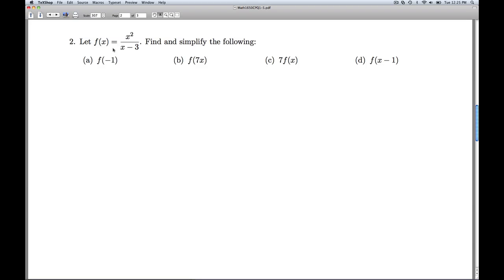Number 2, we're given f of x as this. We're asked to find and simplify the following. And so part a, we're asked to find f of negative 1. And so we're going to replace every occurrence of x in this formula with the quantity negative 1. And I always recommend substituting these numbers with parentheses to avoid common mistakes. So we're going to take negative 1 squared divided by negative 1 minus 3. And we simplify. That's 1 divided by negative 4, which we can rewrite as negative 1 fourth.